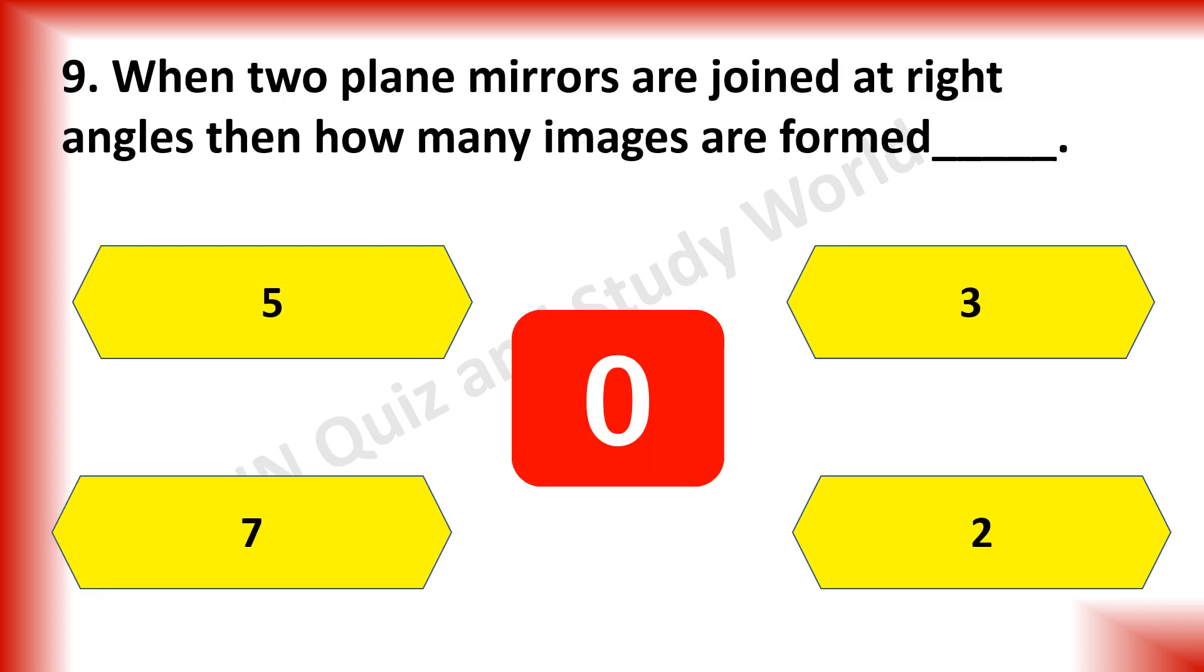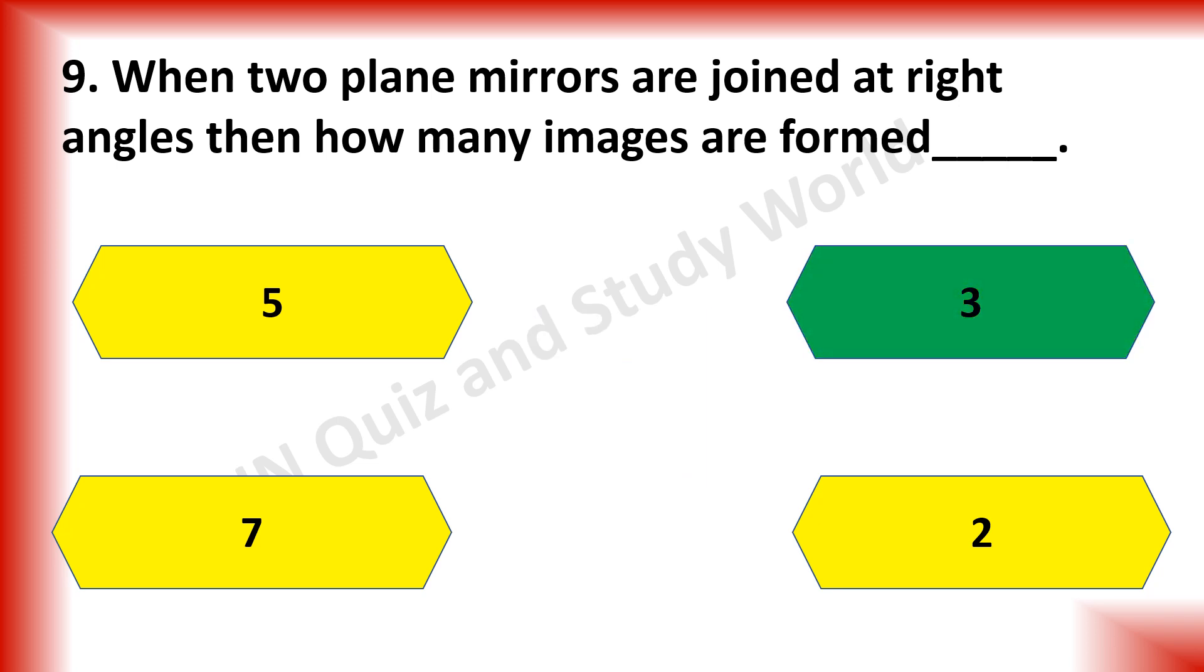When two plane mirrors are joined at right angle, then how many images are formed? Is it 5 images, 3 images, 7 images or 2 images? The answer is 3 images.